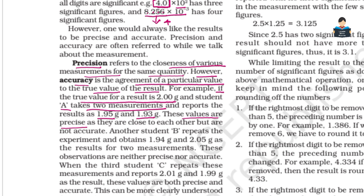So 2 grams is the true value, but student A's measurements of 1.95 grams and 1.93 grams are precise but not accurate — they are close to each other but not close to the true value.